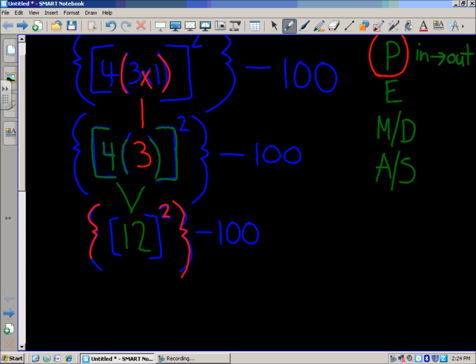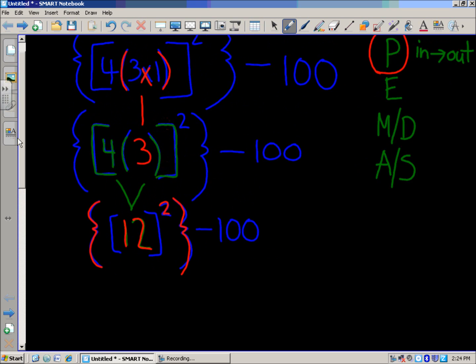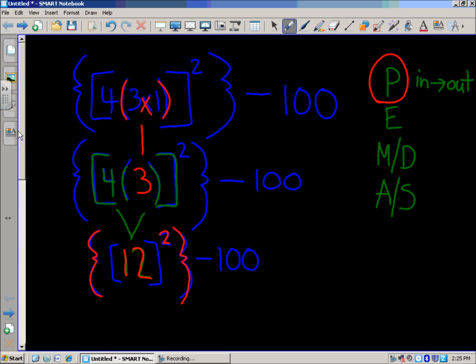So something is going to be elevated to a power of two. Twelve. It's the twelve in there. So twelve to the power of two. What does that mean? An exponent. So look on our please excuse my dear Aunt Sally. We have E for exponents. That's next in our order of operations.